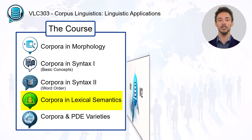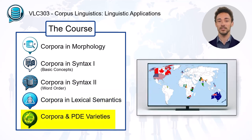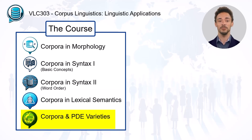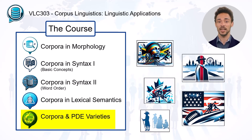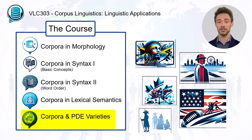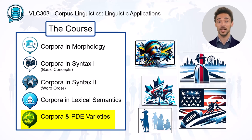Finally, Unit 5 provides a general overview of the varieties of English in a global context. It presents numerous examples and provides material for individual and comparative corpus studies.